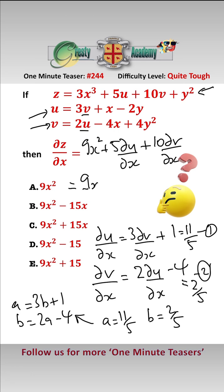So all we need to do now is plug them into our equation, and that equals 9x² add 5 times 11 over 5 add 10 times 2 over 5, which equals 9x² add 15, which is answer E.